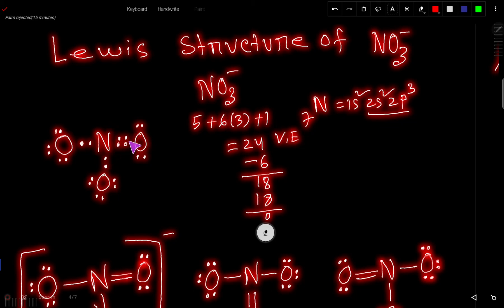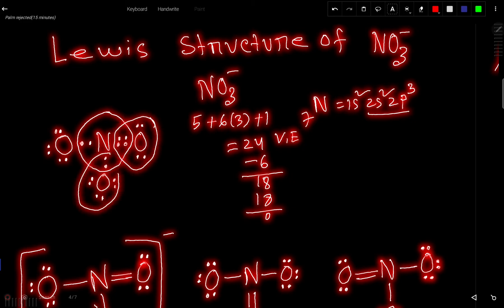So let us move this. So we are getting this. And now nitrogen has eight valence electrons, and every oxygen has eight valence electrons. Actually, this is the Lewis structure of NO3 minus.